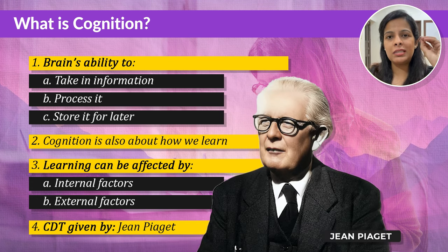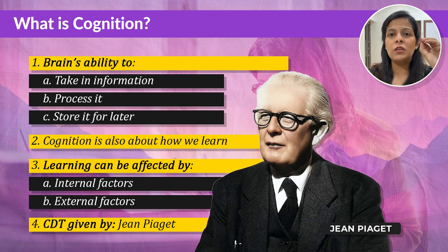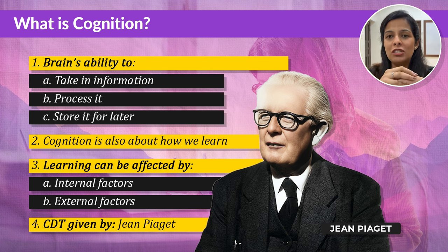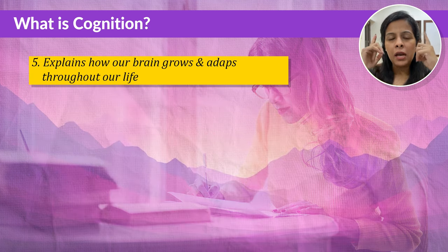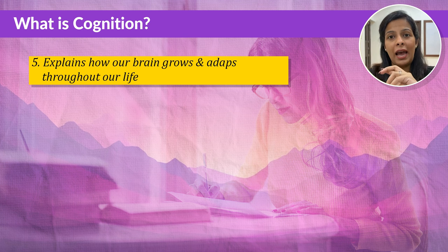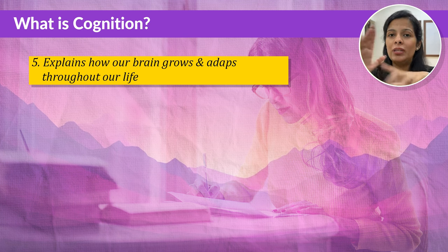This theory has been given by the famous psychologist Jean Piaget, and it basically explains how our brain grows and adapts not just during childhood but throughout life.